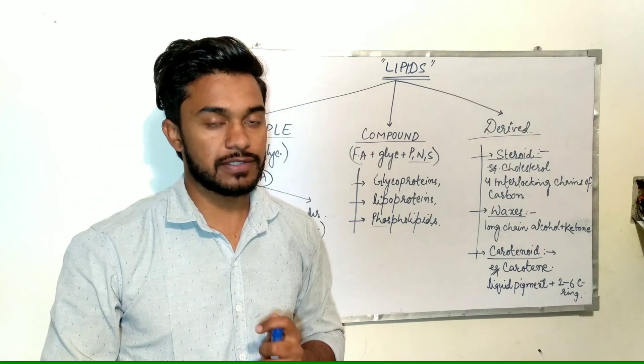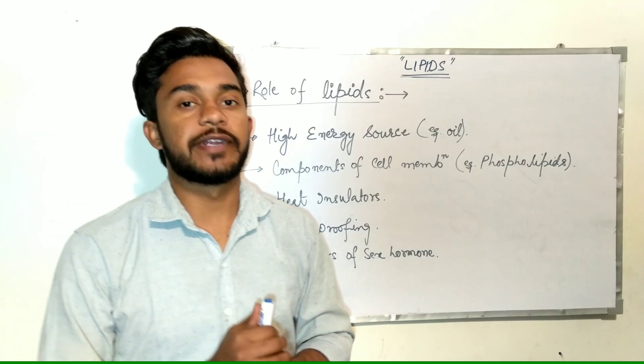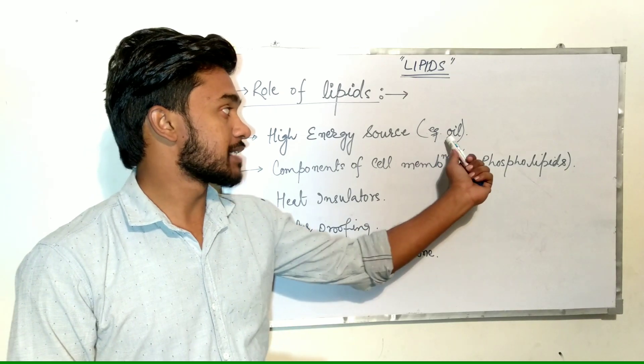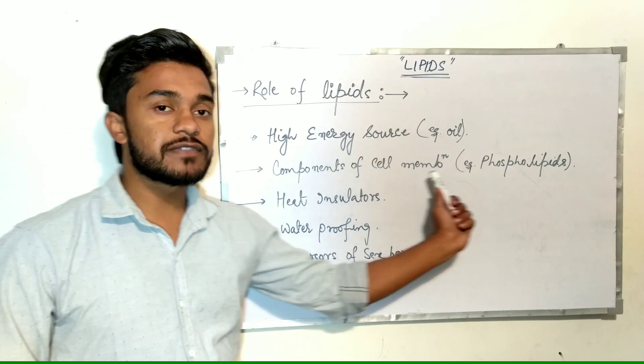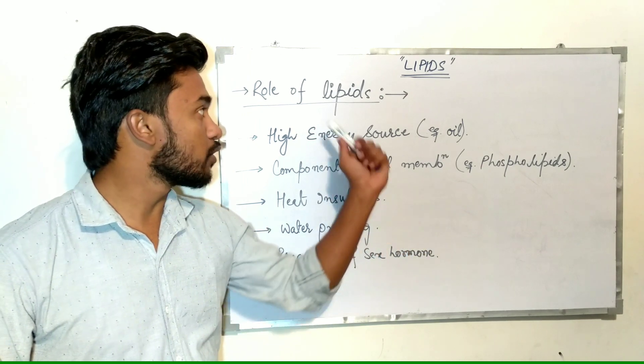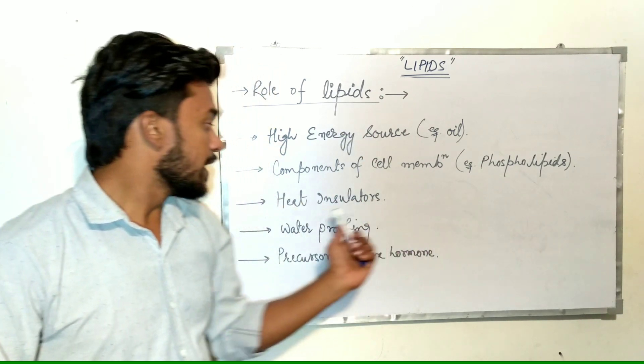The role of lipids: high energy source. They are considered as a high energy source, for example, oil. They are components of cell membranes; the cell membrane contains large amounts of lipids, specifically phospholipids. They also act as heat insulators.